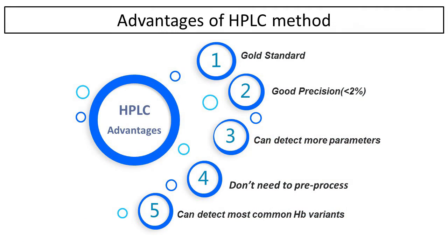High performance liquid chromatography, or HPLC, is the gold standard method for hemoglobin A1c testing. HPLC is an analytical chemistry technique used to separate, identify, and quantify each component in a mixture.